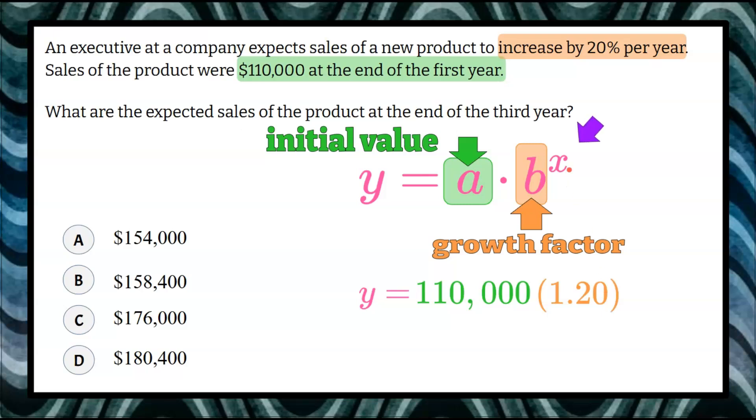Now we need to identify our exponent, which is our amount of time this is going to grow. We have an initial value that's going to grow exponentially at a percentage rate over a period of time. That time, we're told, is at the end of the third year.